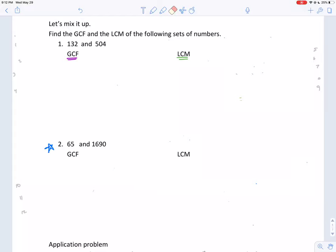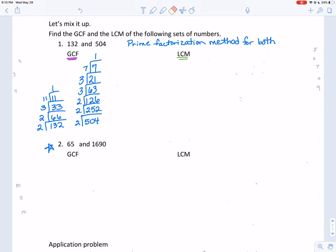Now that you know how to find the greatest common factor and least common multiple of two numbers, we're going to put them together. So to do this in this example, we're going to use the prime factorization method for both the greatest common factor and least common multiple. Of course, we need to start off with the prime factorization of both 132 and 504, which I've listed those numbers down below.